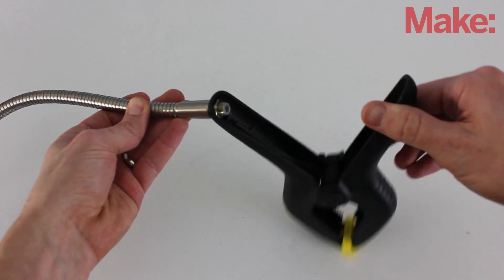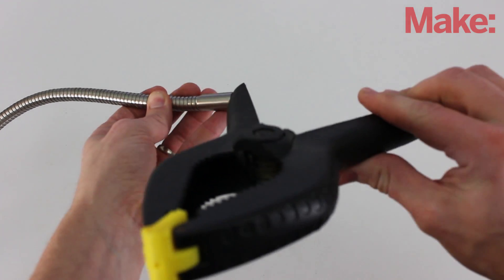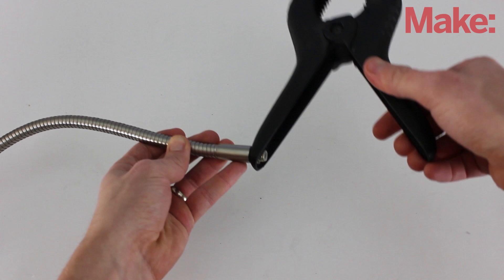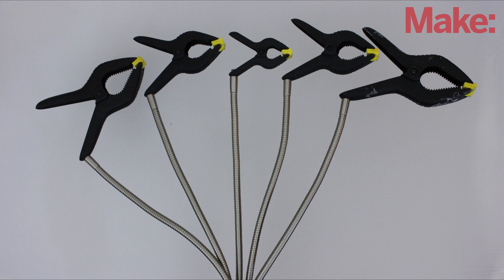Then, I inserted the fitting through the hole and screwed them onto the arm of the lamp. Repeat this to attach each additional clamp.